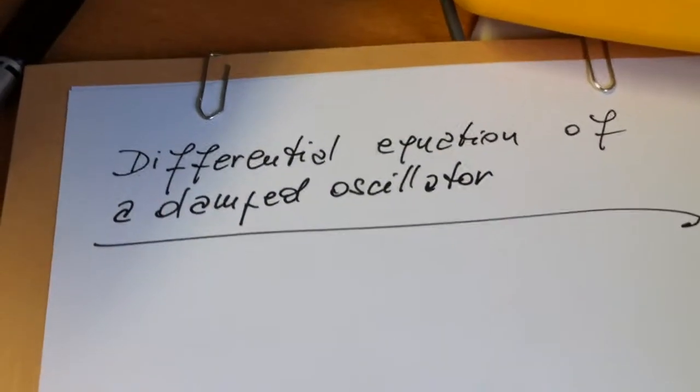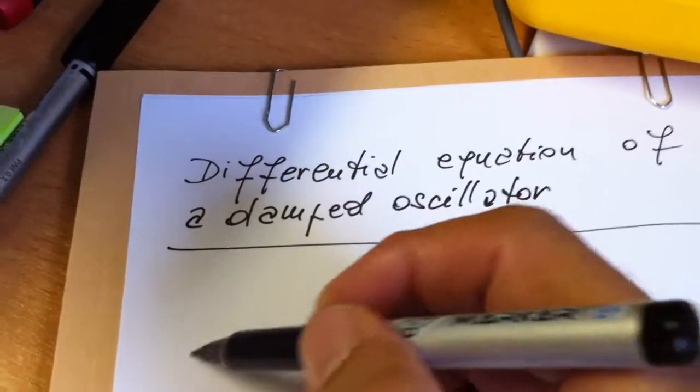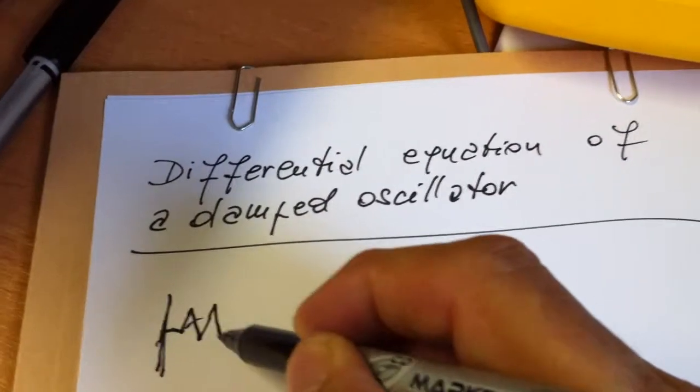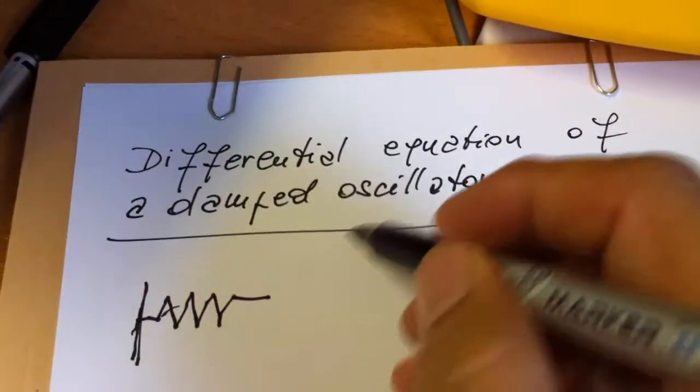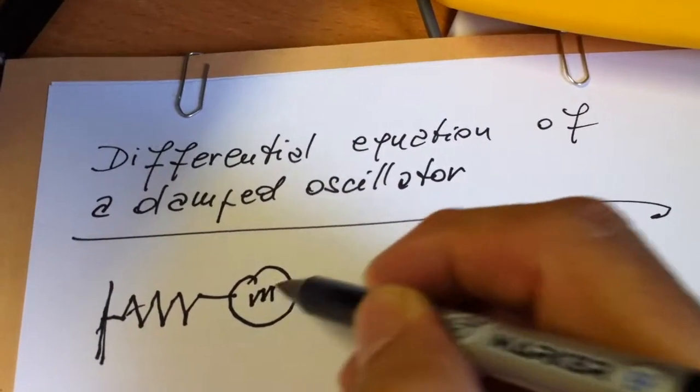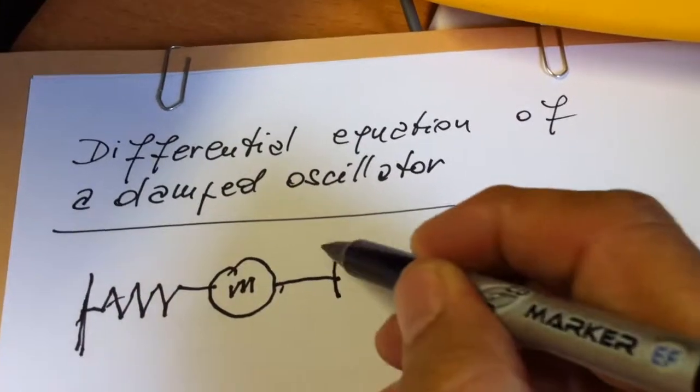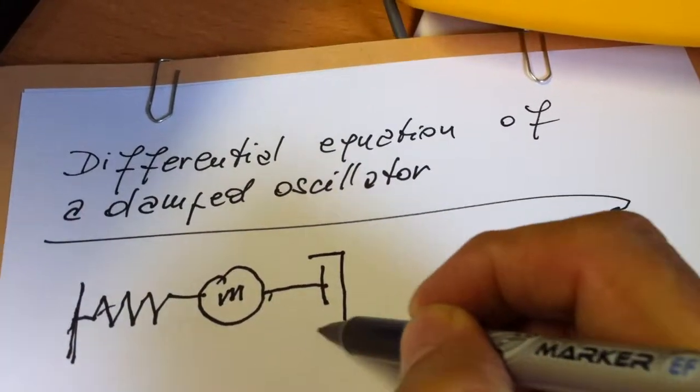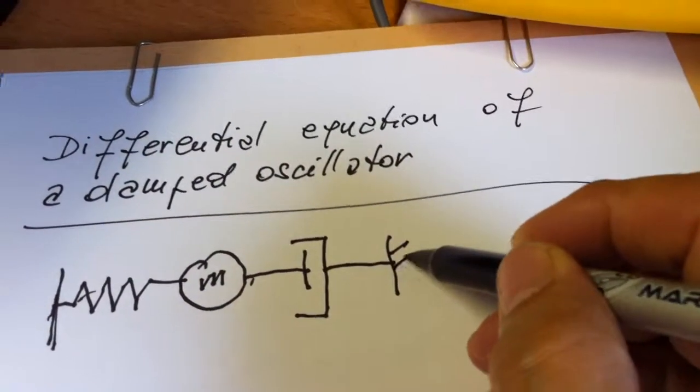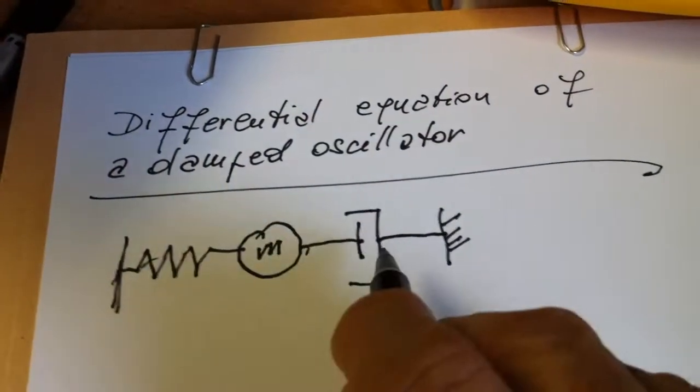So let's start with the physical system. Imagine you have on a horizontal plane a system with a spring, a mass m and a damping system which will slow down movement by a force proportional to the speed. These are the three elements of the system.